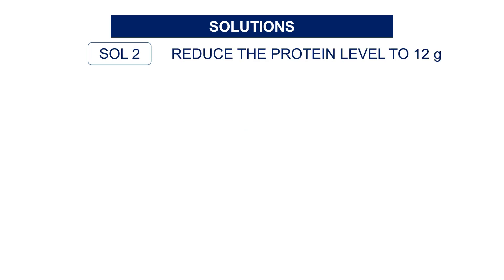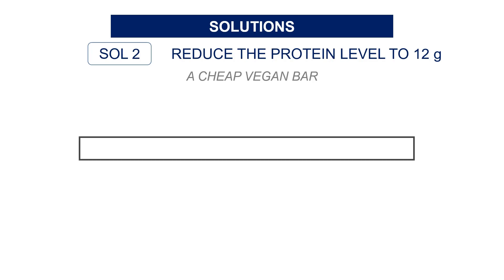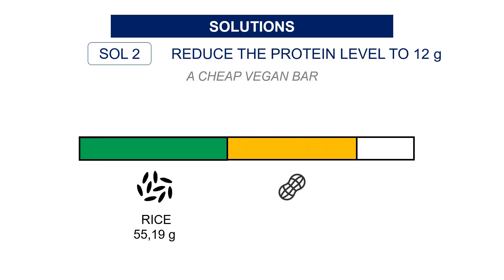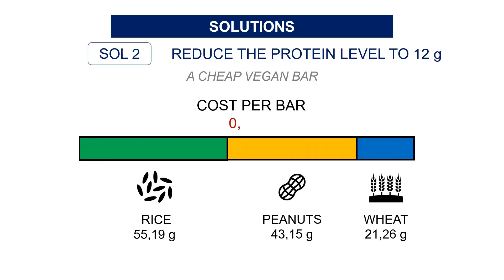Let's try to reduce the amount of protein to 12 grams and label our bar as a vegan bar. Can the model meet the nutritional constraints without meat? Of course it can — with the majority of rice completed with peanuts and wheat. These are cheap ingredients, so the total cost drops to $0.78. You can see your margin exploding. So we reduce the cost by sacrificing a bit of protein, but we can market our bar as a vegan bar.